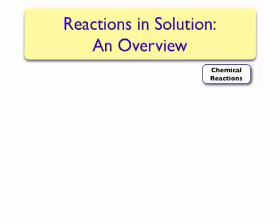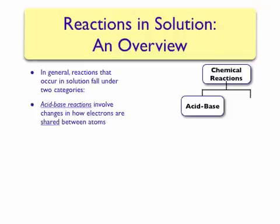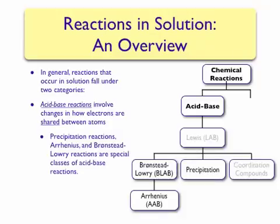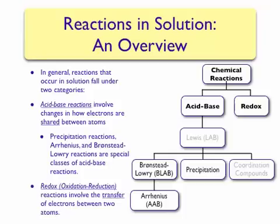We will end by taking an overview of reactions that occur in solution. In general, reactions that occur in solution fall under two categories. The first category is acid-base reactions, which involve changes in how electrons are shared between atoms. Some types we will look at in this chapter are precipitation reactions, Arrhenius, and Brønsted-Lowry reactions — these are all special classes of acid-base reactions. The other general type is redox reactions, which involve the transfer of electrons between two atoms. Redox reactions are also referred to as oxidation-reduction reactions.